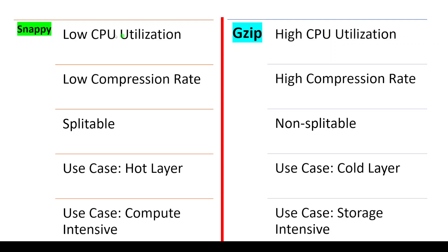The second difference is compression rate. Snappy has a low compression rate whereas GZIP has a high compression rate. For example, if we have a 1GB file and apply Snappy compression, it might produce around 500MB. But with GZIP, it can compress even better — for example, from 1GB down to 200MB. So at the end of compression, a Snappy-compressed file will occupy more space on disk, while a GZIP-compressed file will occupy less space. In this point, GZIP scores better than Snappy.